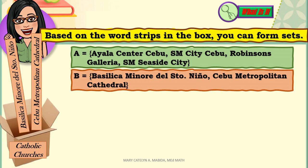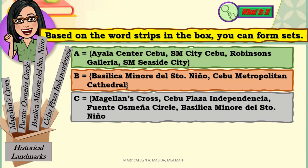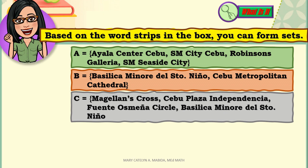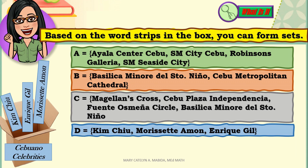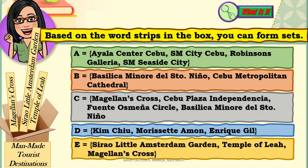Set B is a set of Catholic Churches in Cebu City: Basilica Minore del Santo Niño and Cebu Metropolitan Cathedral. Set C is a set of historical landmarks in Cebu City. Set D is a set of Cebuano Celebrities. And set E is a set of man-made tourist destinations in Cebu City.